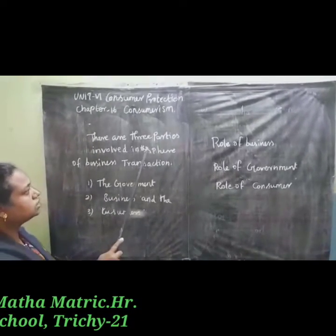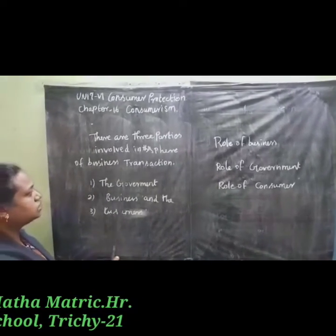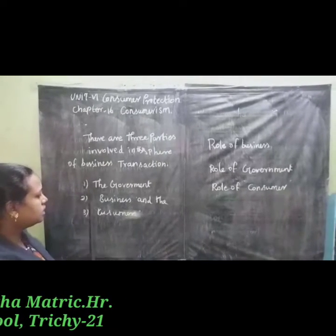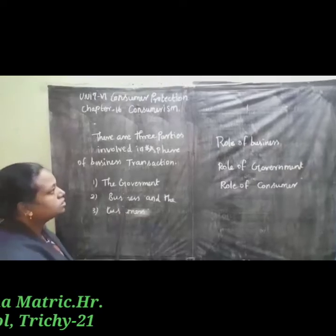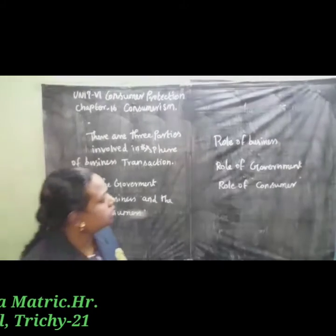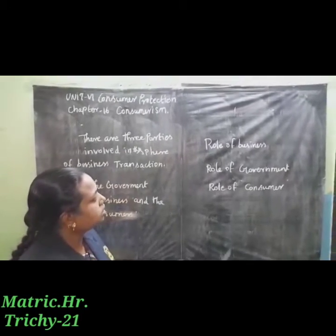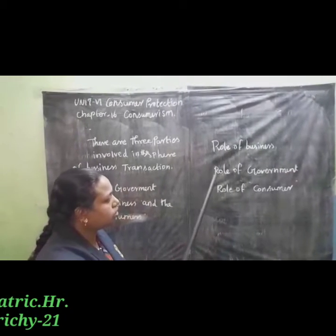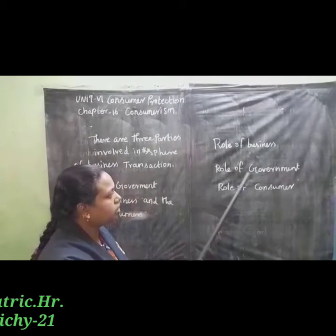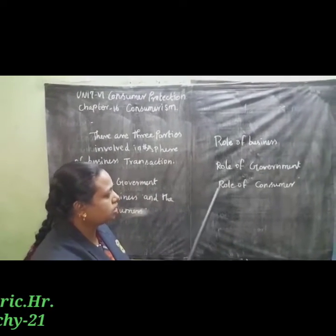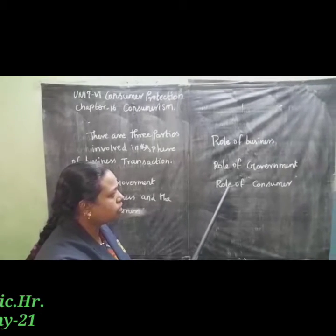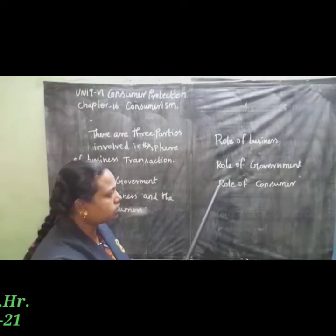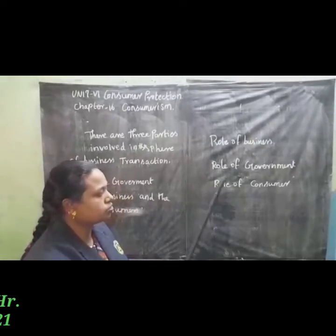There are three parties involved in the sphere of business transactions: number one, government; number two, business; and number three, consumers. So let's see what is the role of business in consumer protection, the role of government in consumer protection, and the role of the consumer in consumer protection.